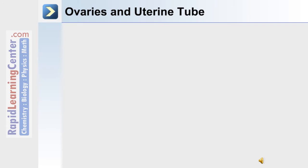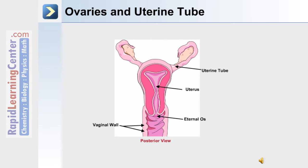A major segment of the female reproductive tract are the ovaries and uterine tube. The uterine tube, or fallopian tube, extends from the uterus and is adjacent to the ovary. At the distal end is the infundibulum and the fimbrae. The fimbrae are where the expelled egg from the ovary is captured and taken up into the uterine tube.